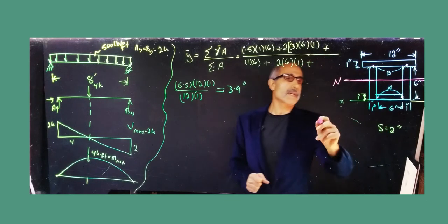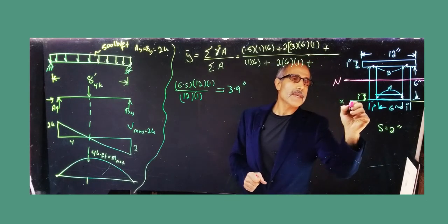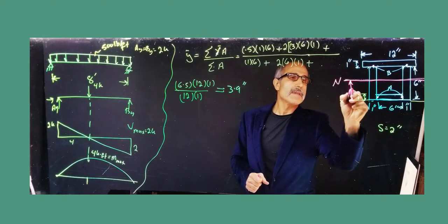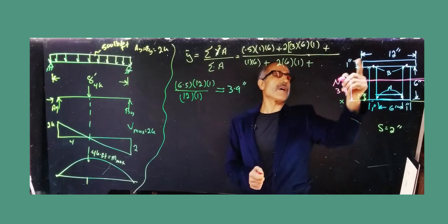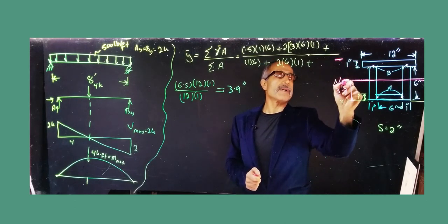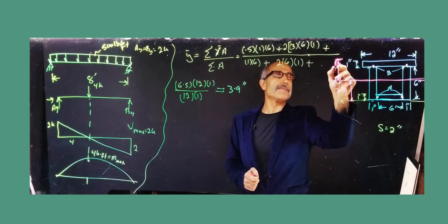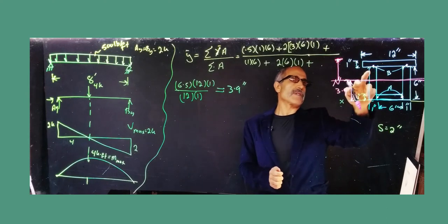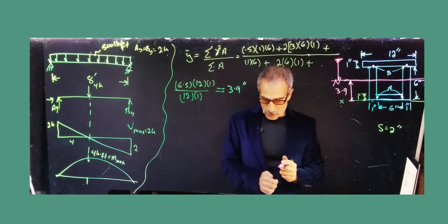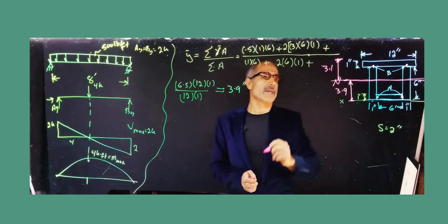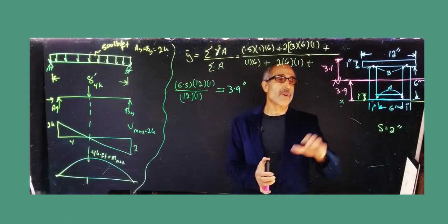The neutral axis is 3.9 inches from the bottom. From the top, that means the distance is 7 inches minus 3.9, which equals 3.1 inches from the top. Good to know.